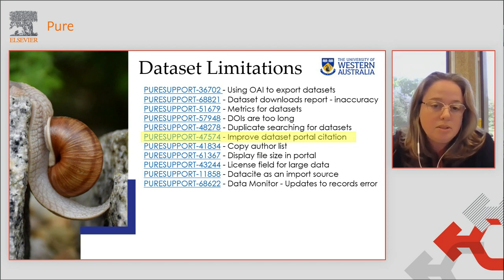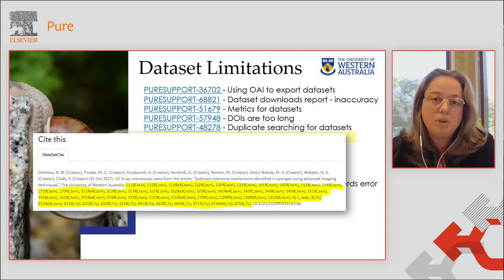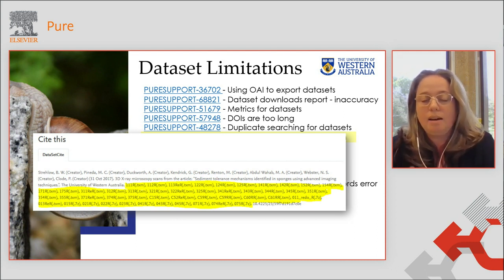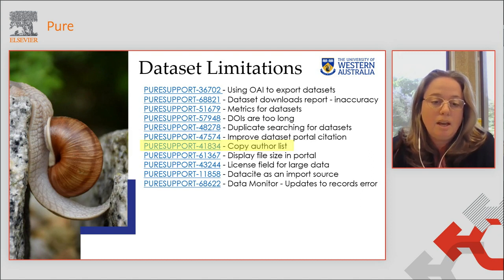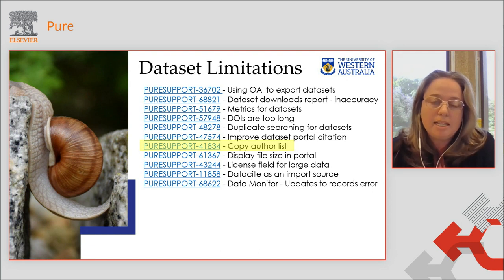We'd like to improve the citation which is generated in the portal. Each dataset file that exists per record is tacked onto the end of the citation in yellow. You can see how cumbersome this can look when there are several files associated with the dataset. We'd also like the ability to copy author lists from research outputs, especially if those author lists are really long, as that makes it easier for us to create dataset records.